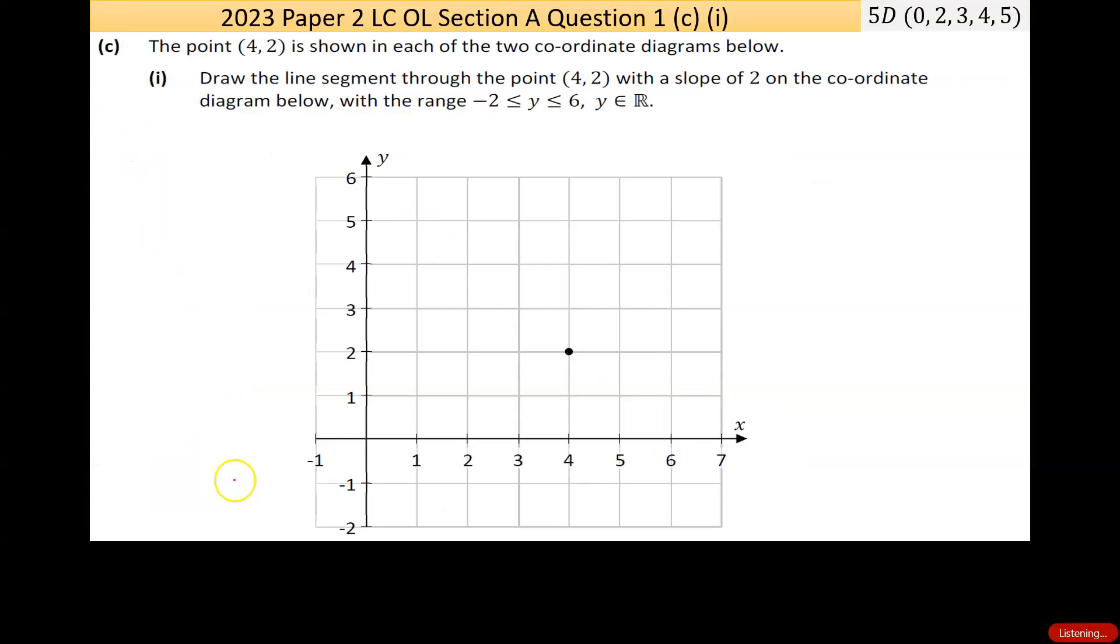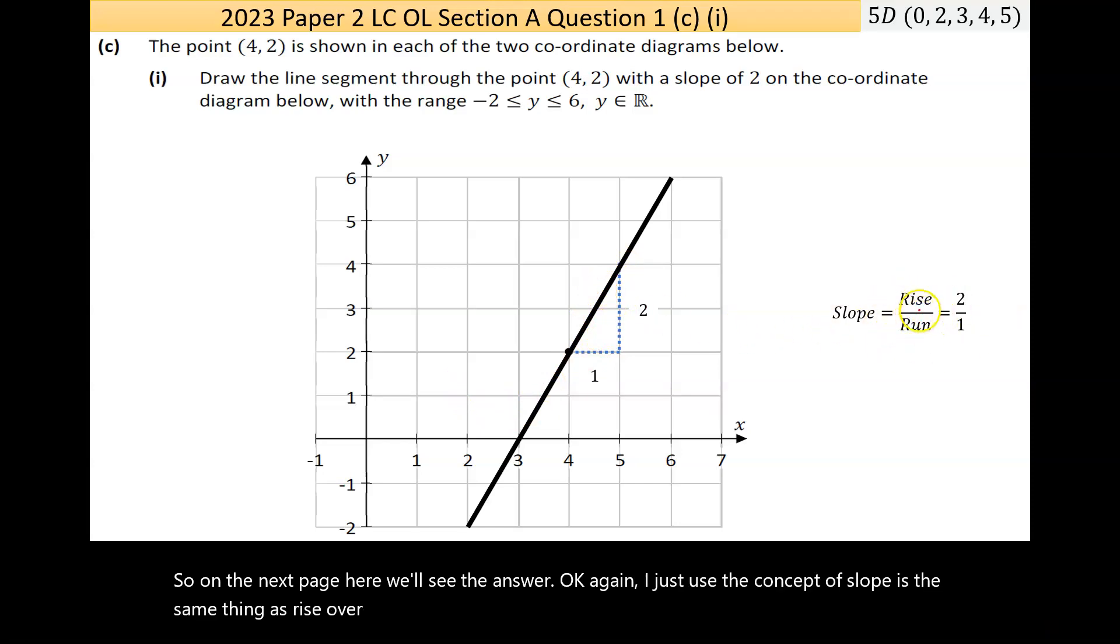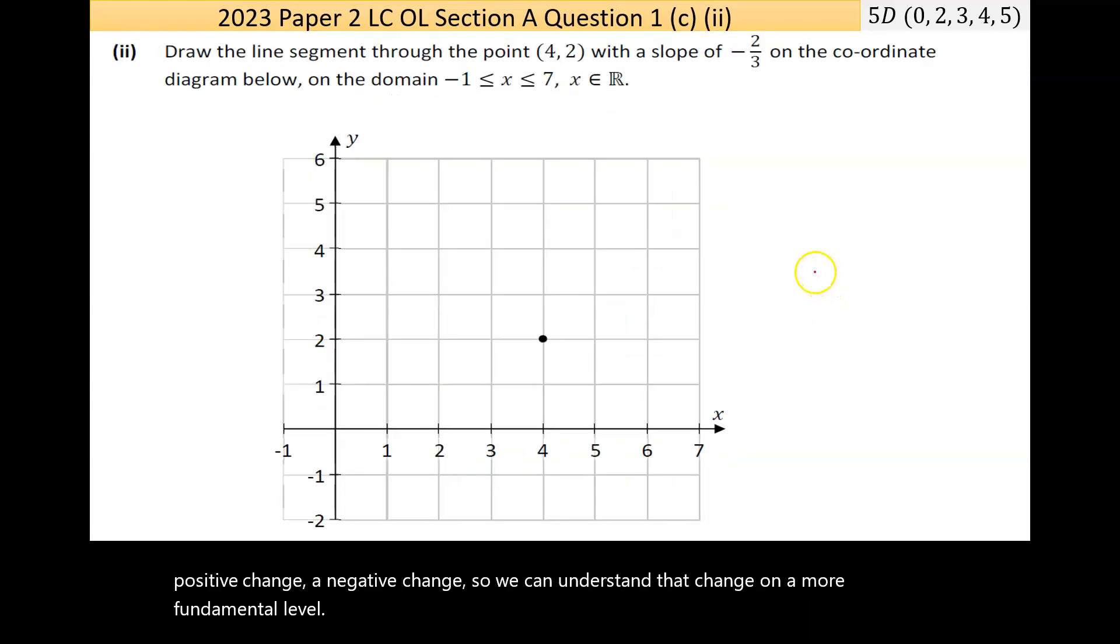On the next page, we'll see the answer. I just use the concept of slope is the same thing as rise over run. To have a slope of 2, it must be going up twice for every one it's going across. The next one has a slope of -2/3. The negative means it's going down, so it's going down two for every three it goes across. If that's the starting point, it's going down two, across three - you'd have a point here.